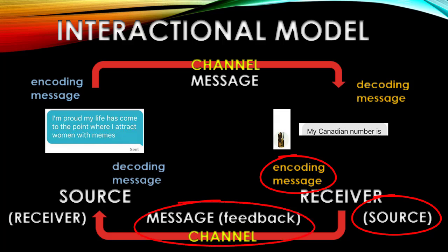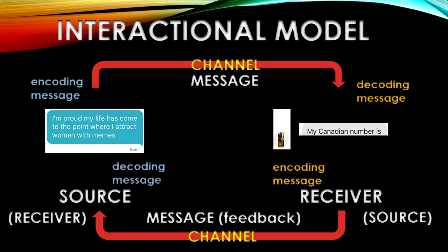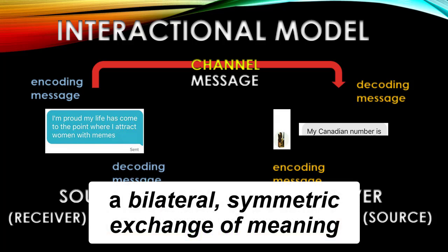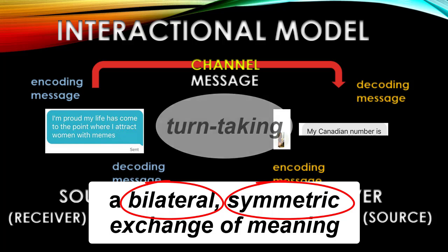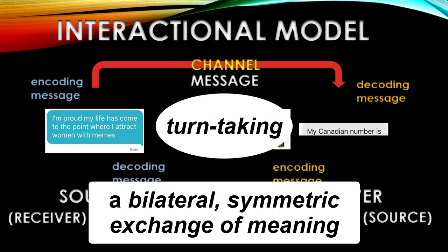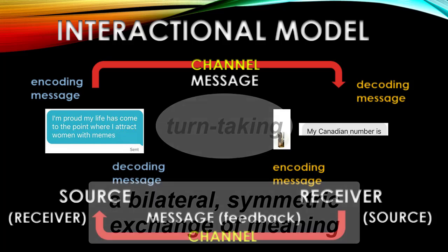So two things are really important in this model. First of all, we have a bilateral and symmetric approach to understanding communication. It's not just the speaker sending everything one way and primarily being in charge, but both parties to the communication are going to alternate turns as source and receiver of messages through a turn-taking process. This back and forth — I take a turn, then you take a turn, then I take a turn — this circular process is one really important part of this model, improving over the transmission model.